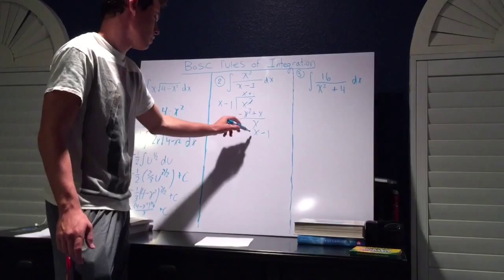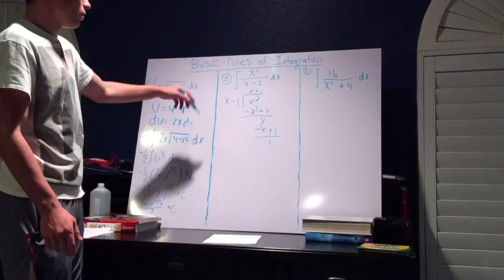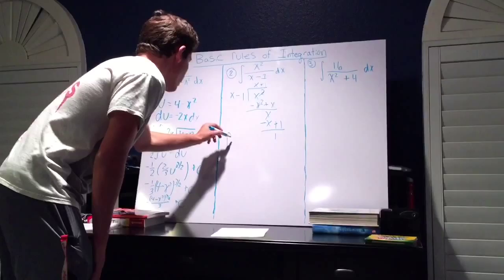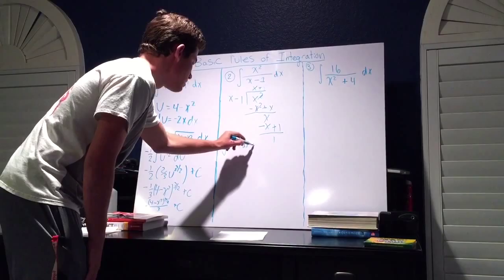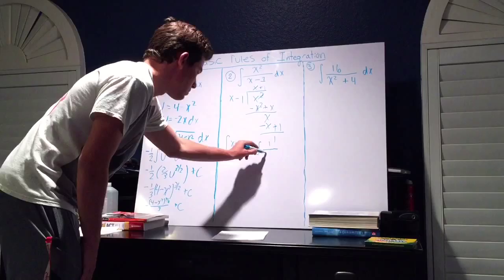Now we can rewrite the initial problem as the integral of x plus 1 dx plus the integral of 1, the remainder from the long division, over x minus 1 dx.